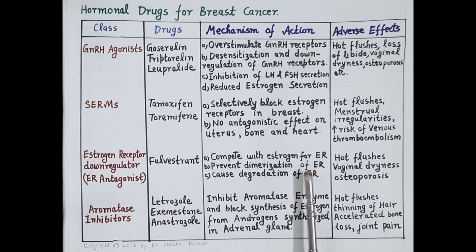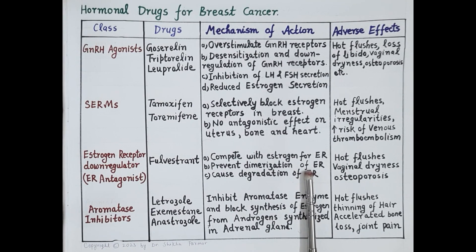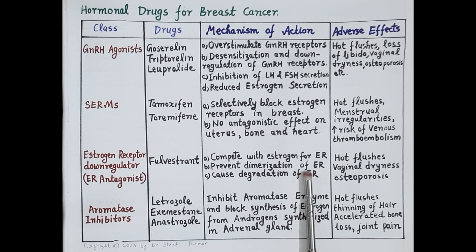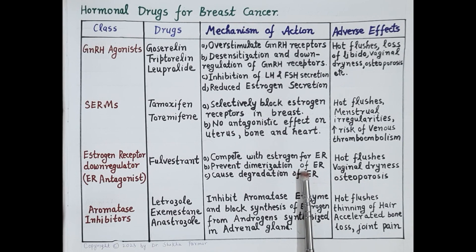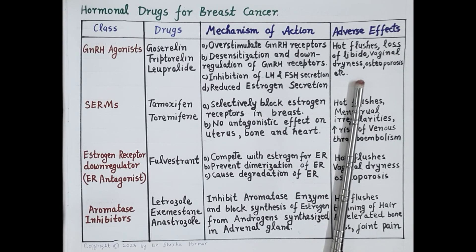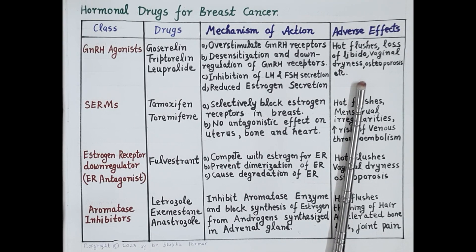This chart gives a summary of hormonal drugs used for breast cancer. Drugs that reduce the effect or secretion of estrogen are associated with adverse effects like hot flushes, loss of libido, vaginal dryness, osteoporosis, and cardiovascular diseases.